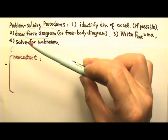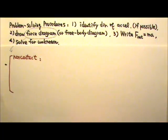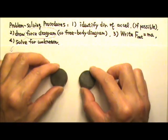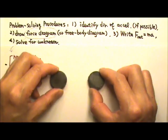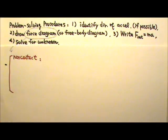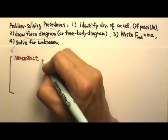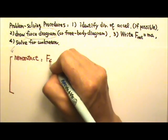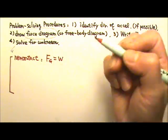Gravity is one example. The earth does not have to touch this marker to pull on it with a gravitational force. Electric force and magnetic force do not require contact either, but in this unit we're not going to worry about those. So we will just have gravity, or gravitational force, which is also the weight of an object.